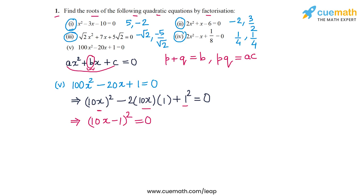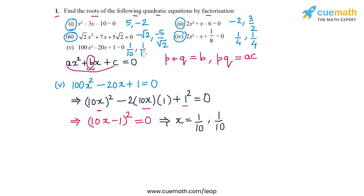The quadratic factorizes into two identical linear factors. So the two roots are identical: x = 1/10 and x = 1/10. Both roots of this equation are 1/10. That solves part 5, and with that all parts of question 1 are done.